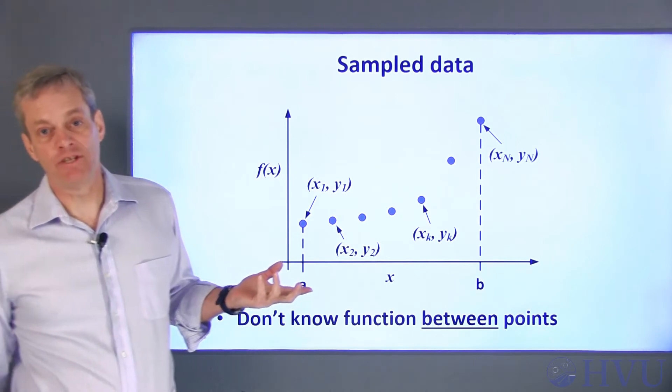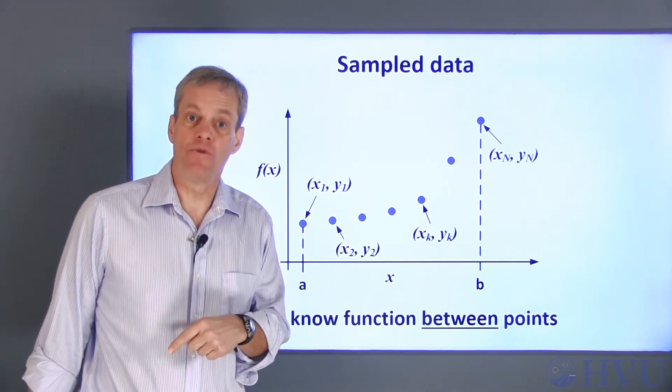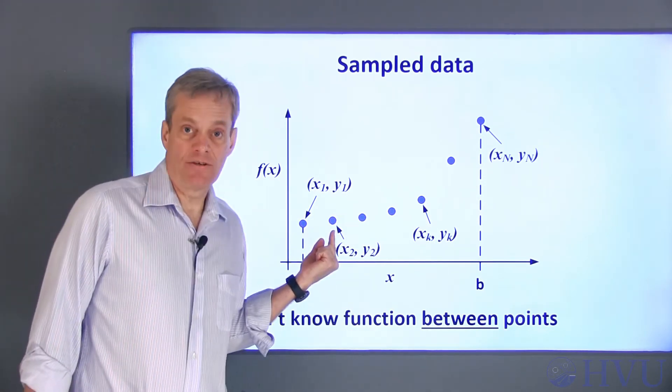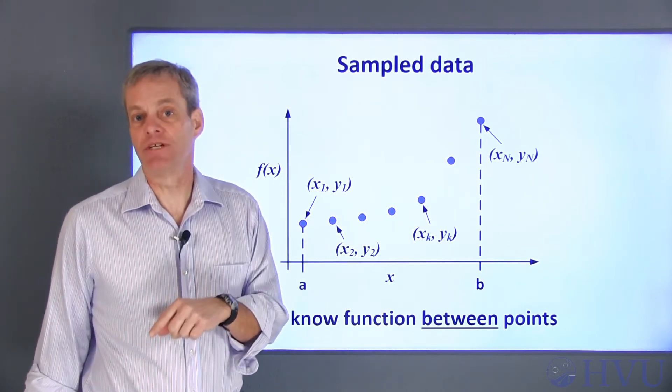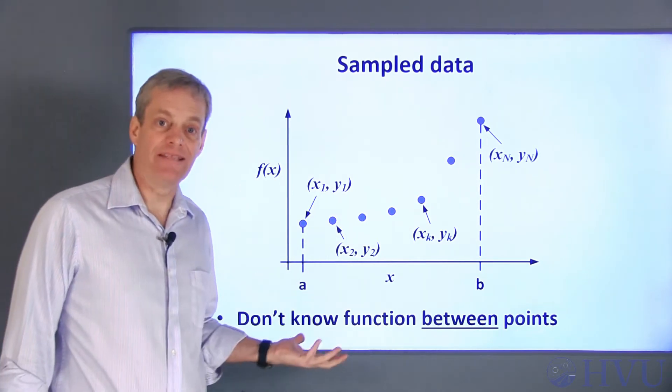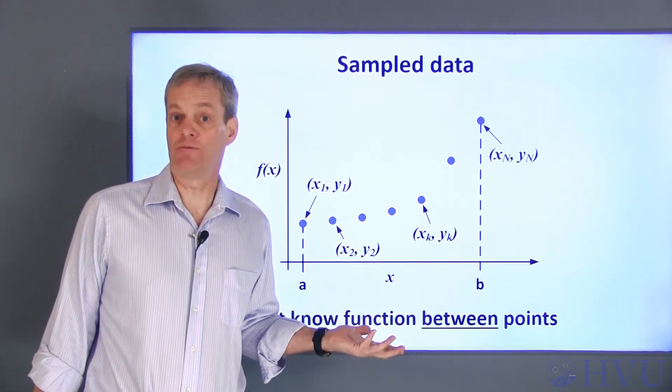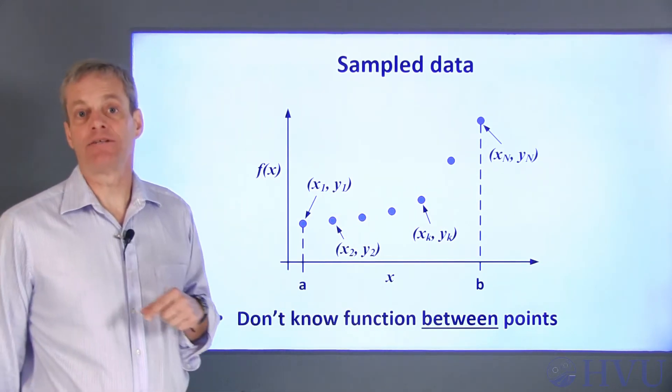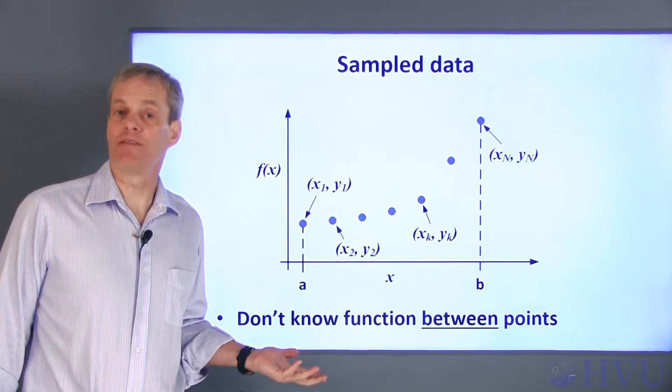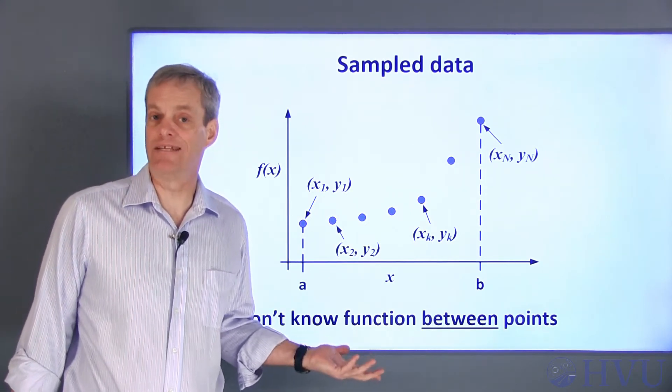In order to estimate the area of each of these subintervals, we need two things, the x and y values of the points, and an assumption as to what the function looks like between the data points. Next, I'll talk about two different approaches towards determining the data points we need. After that, I'll talk about some common assumptions about the behavior of the function between the data points.